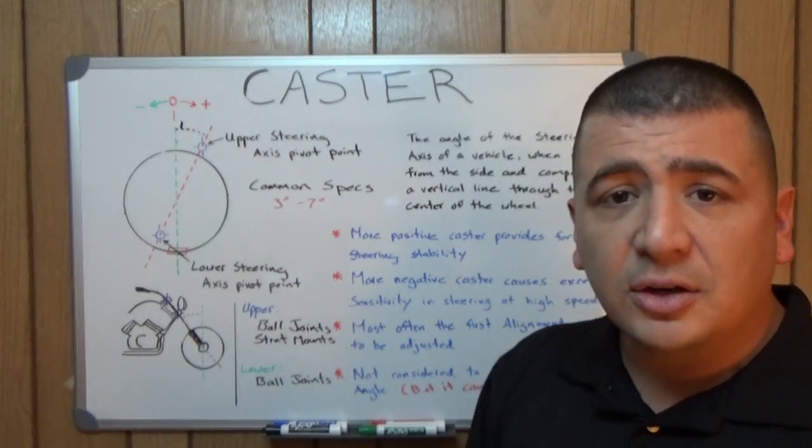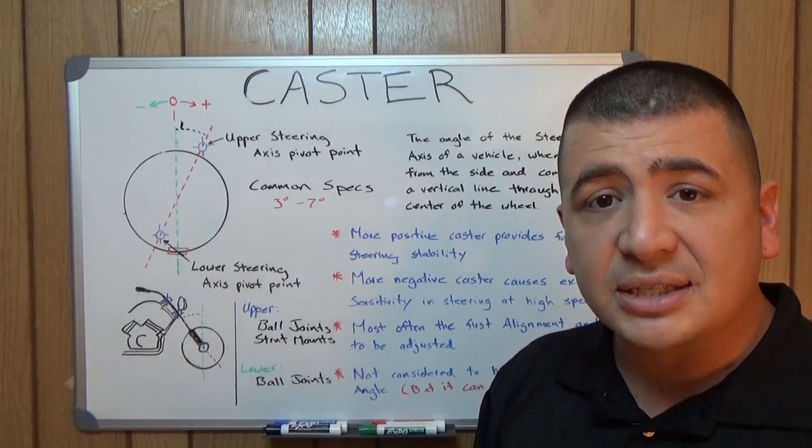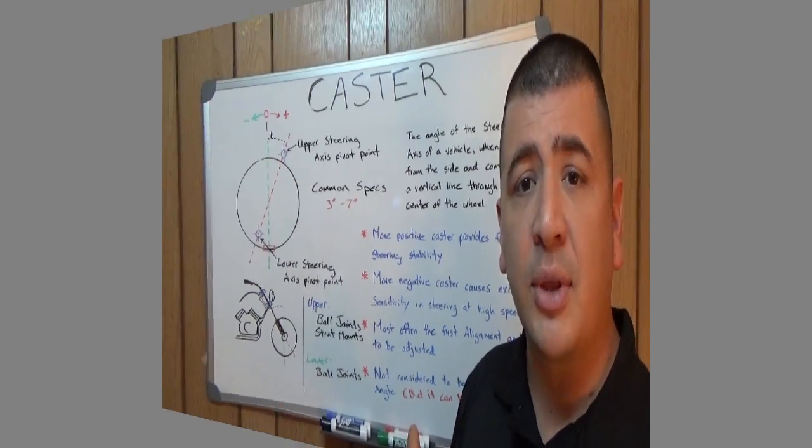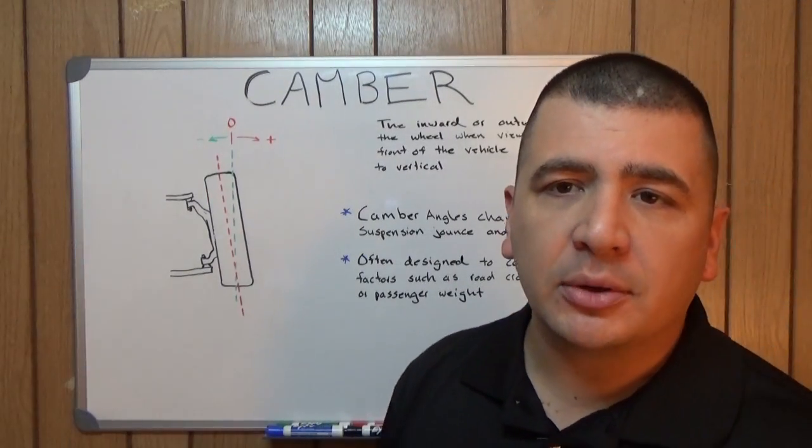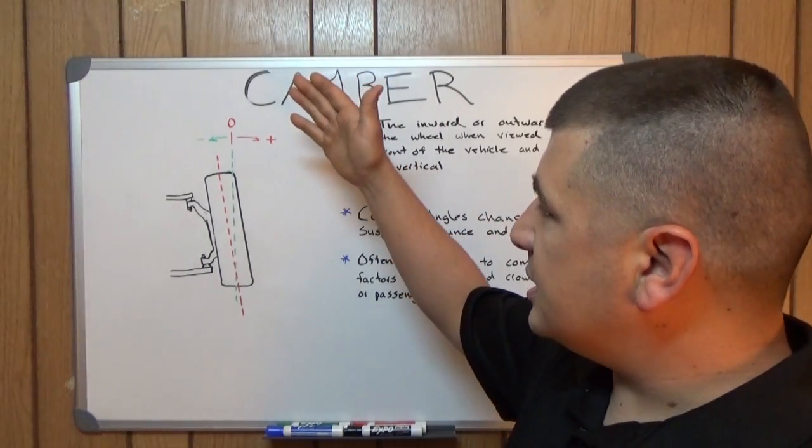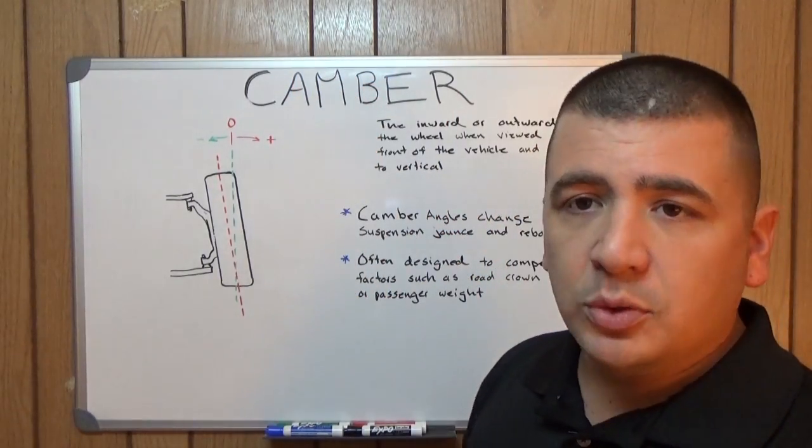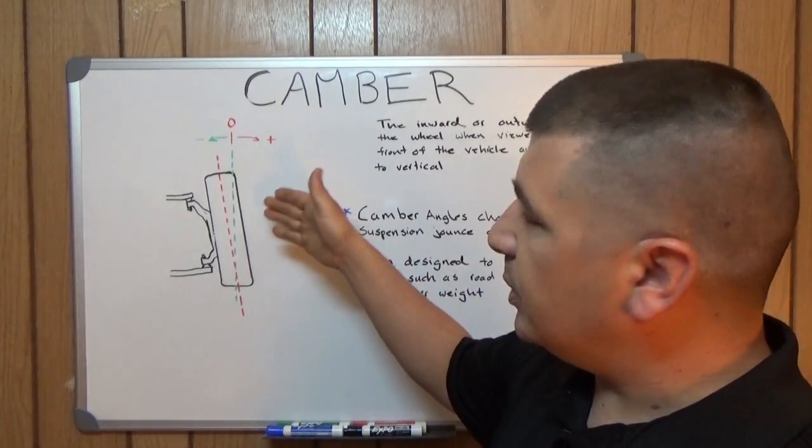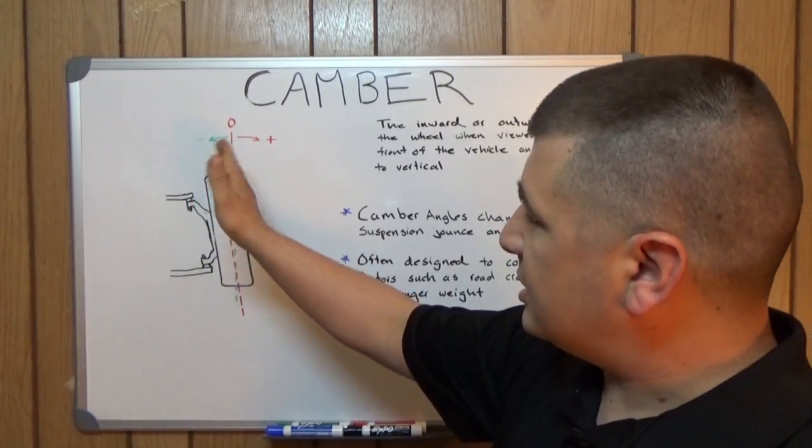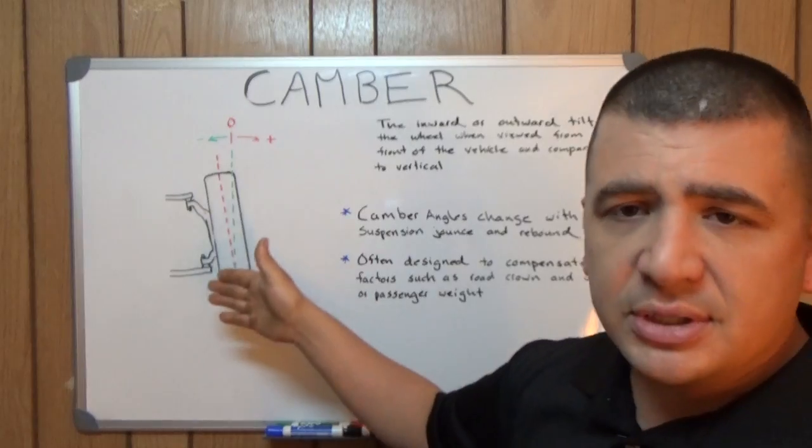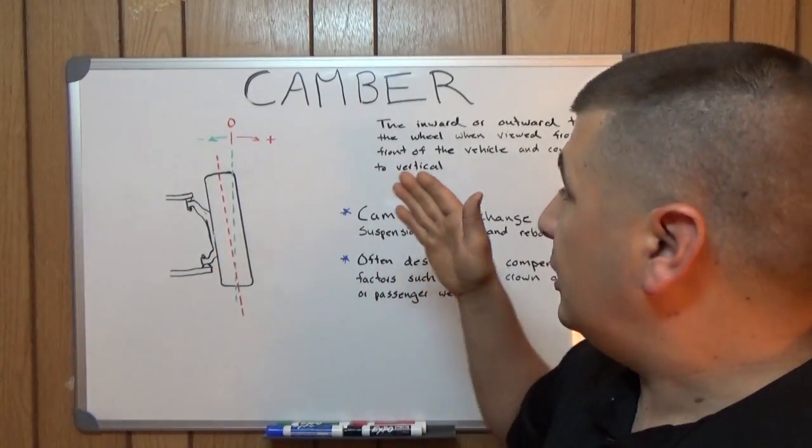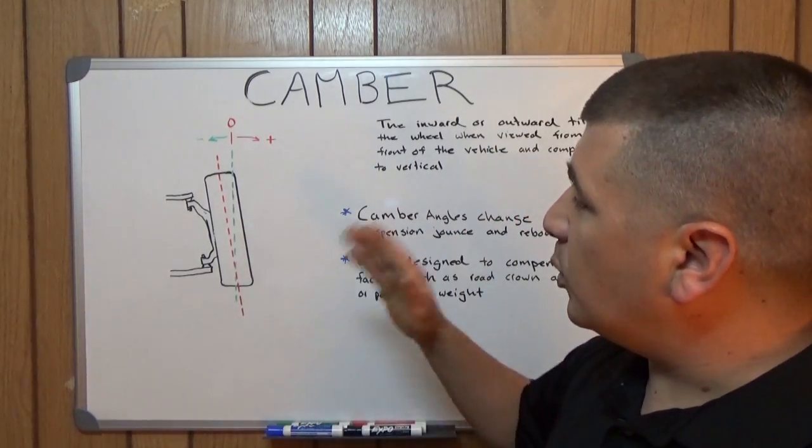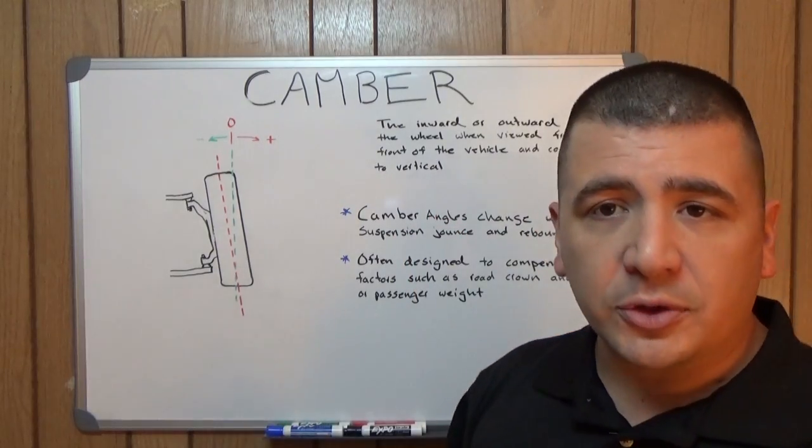Next in our series, we're going to be moving on and discussing camber. Okay, we got our board switched over to camber now, so let's look at this. Right off the bat, we can see camber is much easier to visualize than caster was. And this is what I'm talking about, because camber is an actual movement of the wheel. In this case, the wheel tilted in or tilted out. So it's much easier to see and visualize.